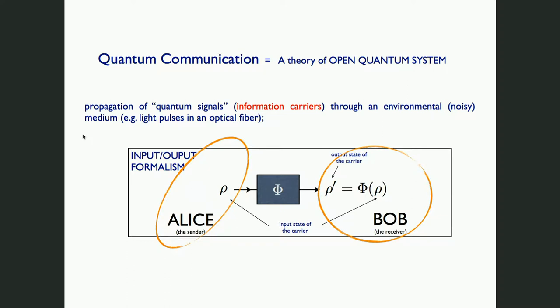In quantum communication, you assume an input-output formalism where you have two parties — Alice and Bob — the sender and the receiver of the message. You give Alice the possibility of manipulating the initial state of the quantum signal you want to send through the communication line, and you give Bob the possibility of operating on the messages which have been transformed by the action of the environmental noise representing the dynamics of the pulse propagating through the line.